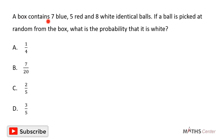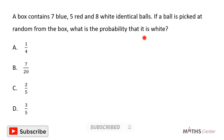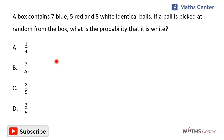A box contains seven blue, five red and eight white identical balls. If a ball is picked at random from the box, what is the probability that it is white? This is a multiple choice question and so we will solve the question and then pick the correct option.